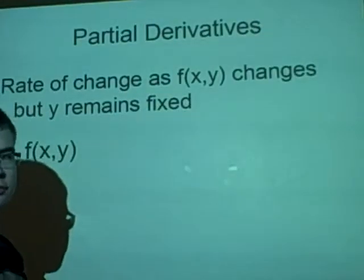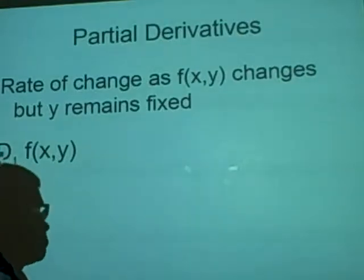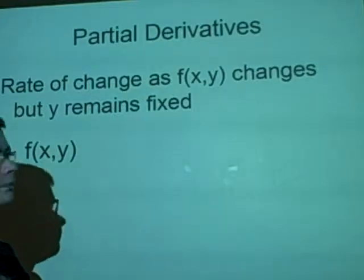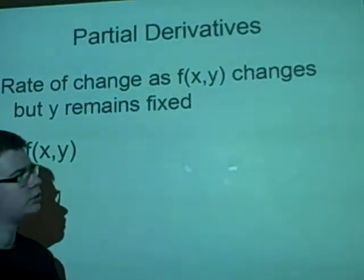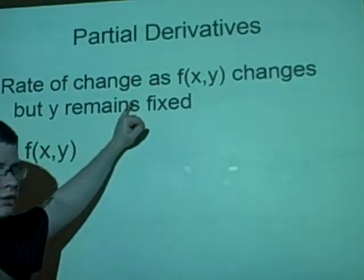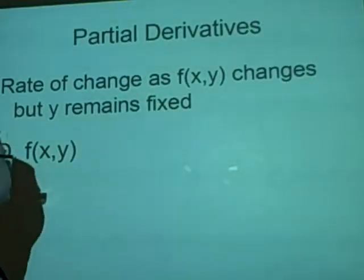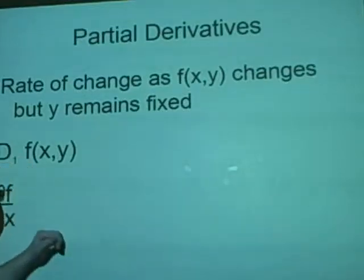Right now, partial derivatives. This is not that hard. It's the rate of change as f(x,y) changes, but y remains fixed. So this basically means we differentiate one part and leave the other part the same as a constant.